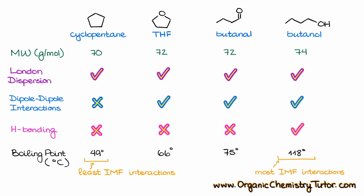You may wonder why THF has a slightly lower boiling point than butanal (66°C vs 75°C) even though they have the same intermolecular forces and the same molecular mass. In THF, oxygen is in a bent molecular geometry, so the two dipole vectors point toward oxygen at an angle of about 109°, partially diminishing each other. In butanal, there is one strong dipole vector from carbon toward oxygen with no competing vectors, making it more polar than THF and giving it the slightly higher boiling point.